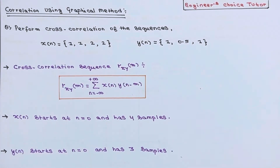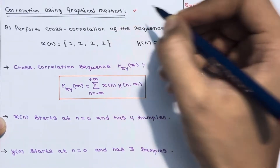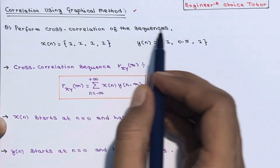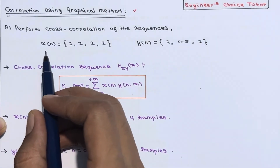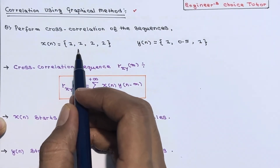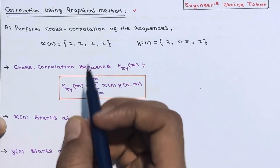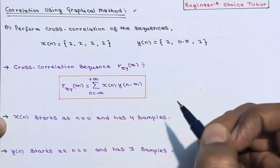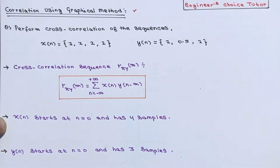Hi everyone, in this lecture we will see correlation using the graphical method. Perform cross correlation of the sequences given as x[n] = {1, 1, 2, 2} and y[n] = {1, 0.5, 1}. These two sequences are given and you have to calculate the cross correlation.